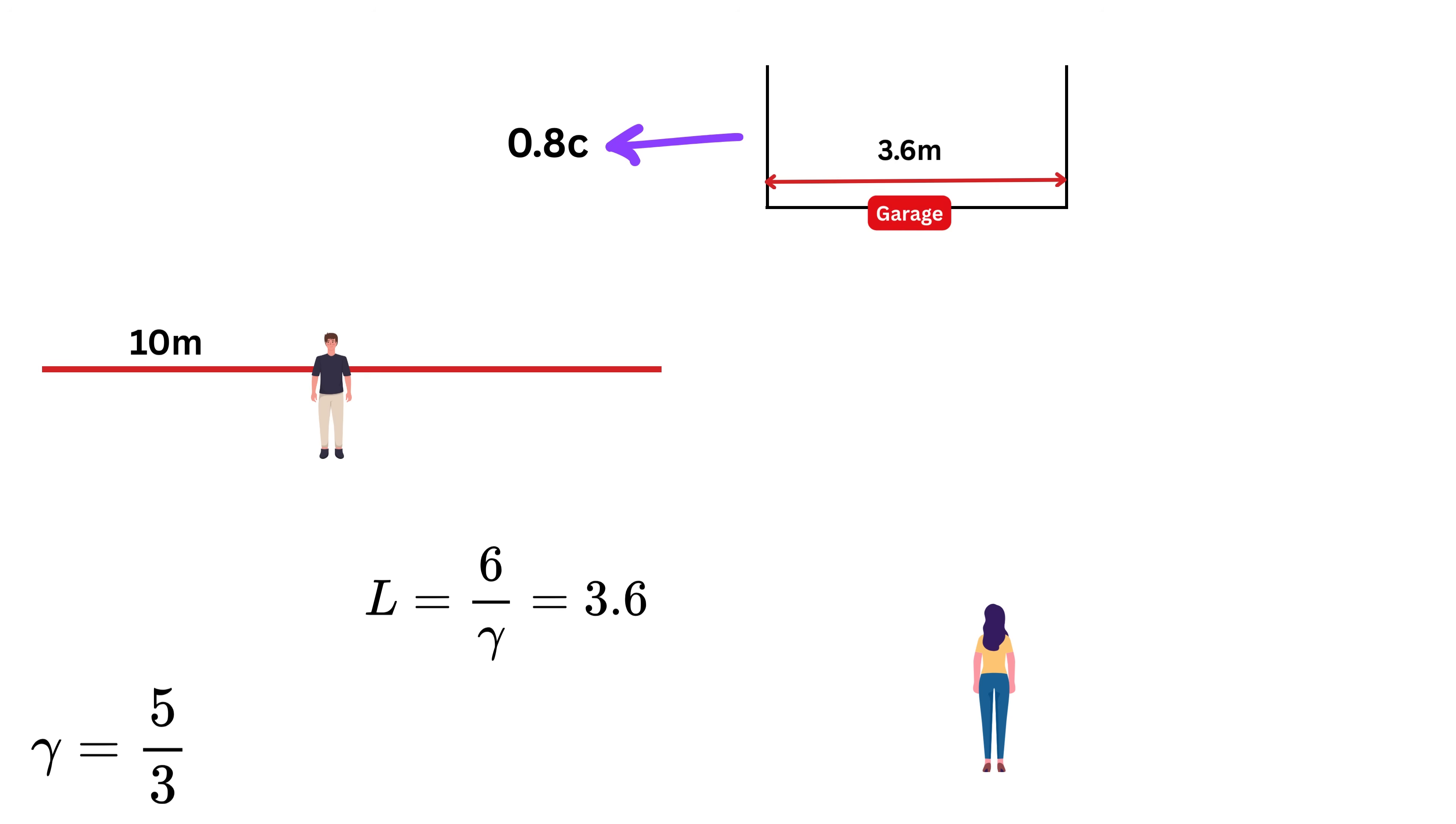So in his frame, it's the garage that appears contracted, not the pole. The 10 meter long pole stays 10 meters, but the garage shrinks to just 6 divided by gamma, which is approximately 3.6 meters. So now in Bob's frame, the garage is much shorter than the pole.